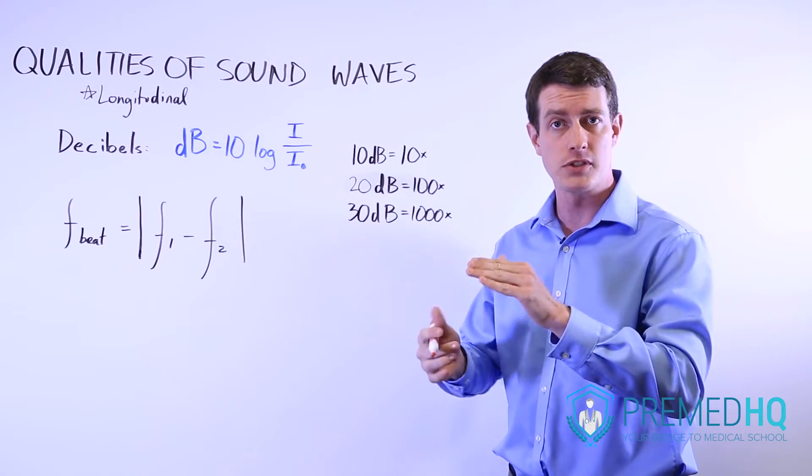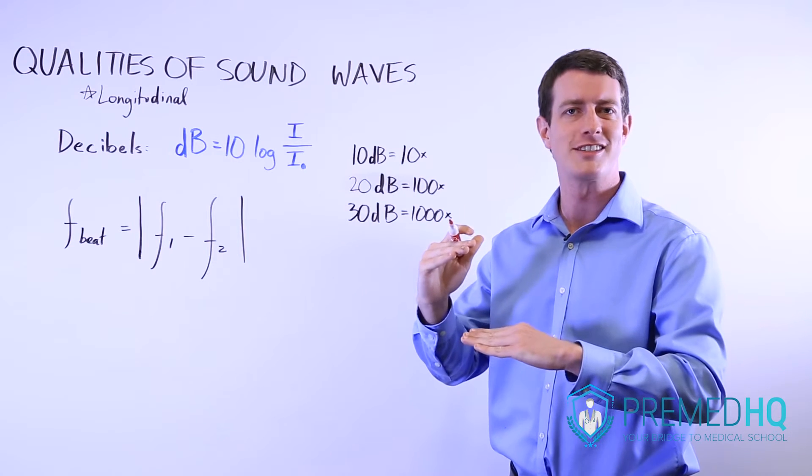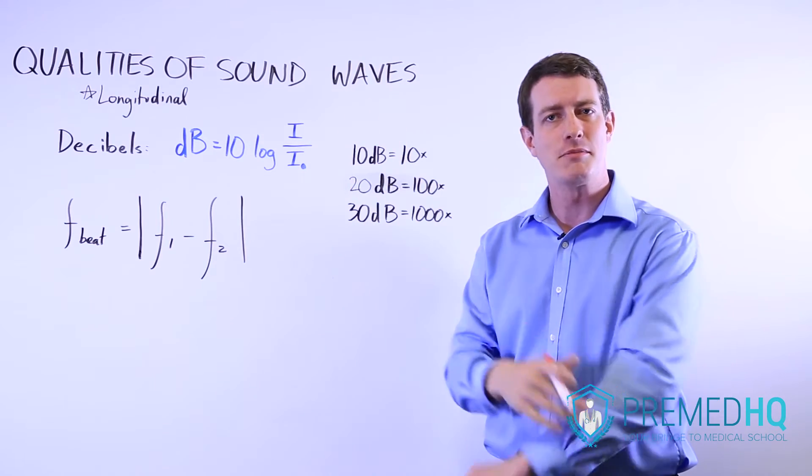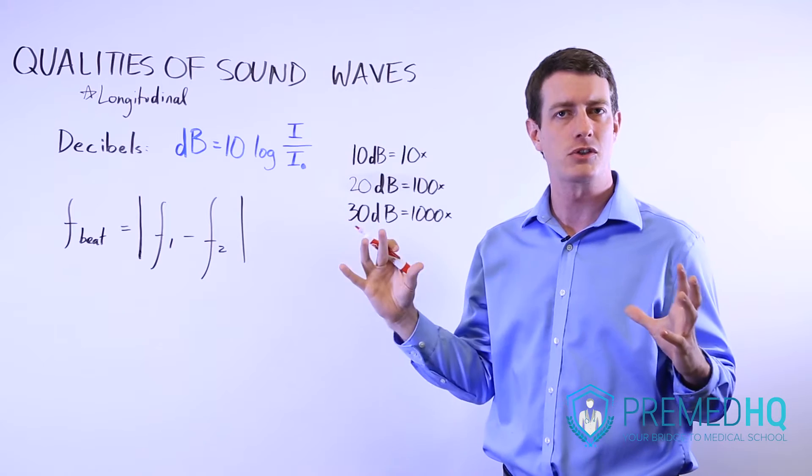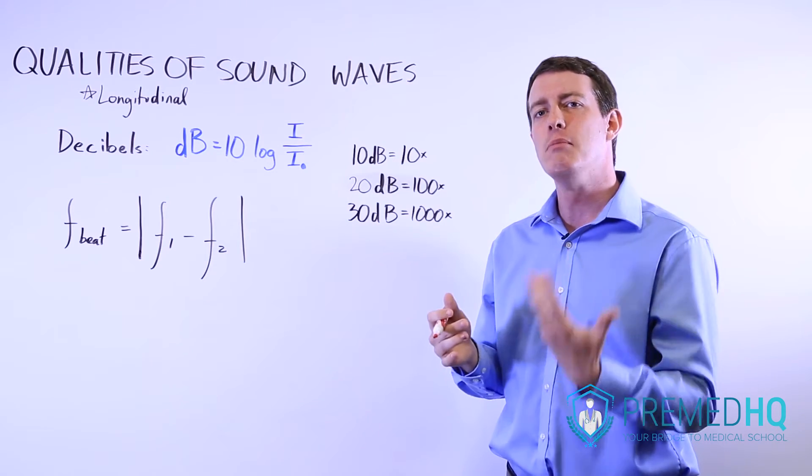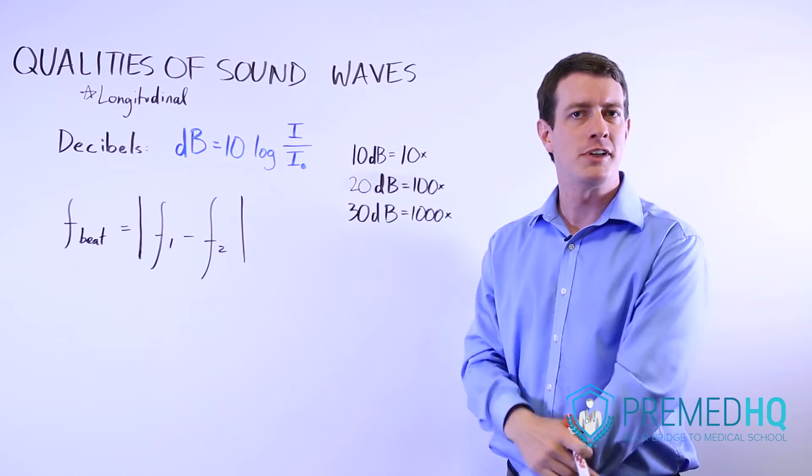So if something is 10 decibels, it is going to be 10 times as great as the reference intensity. Whereas if it's 20 decibels, it's going to be 10 times 10 times as great, so it's going to be 100 times as great. Just realize that a 10 decibel increase means a tenfold change, and 20 decibels means 100 and so on.